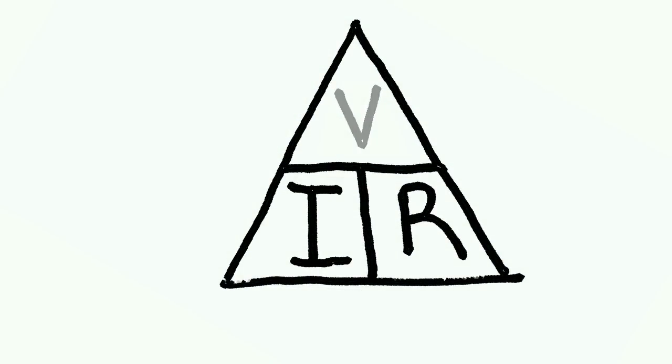To find voltage, we multiply current by resistance. To find current, we divide voltage by resistance. And likewise, to find resistance, we divide voltage by current.